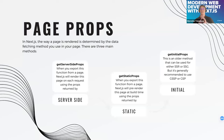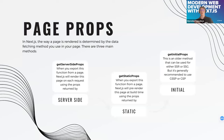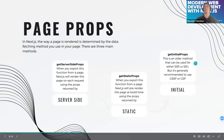One more note: getInitialProps is another method that can be used for SSR or SSG. Next.js will handle it as SSR or SSG depending on how it's recognized, but it's better to use getServerSideProps or getStaticProps instead — getInitialProps is just a legacy method. The choice between SSG and SSR depends on the needs of your page.